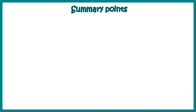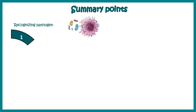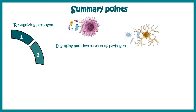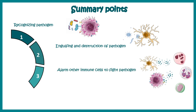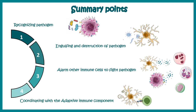In this video we learned how innate immune system components recognize pathogens, how they can engulf and destroy these pathogens, how they can send alarm signals to recruit other immune components to the site of infection, and how they interact with the adaptive immune system components to coordinate a specific and stronger immune response.